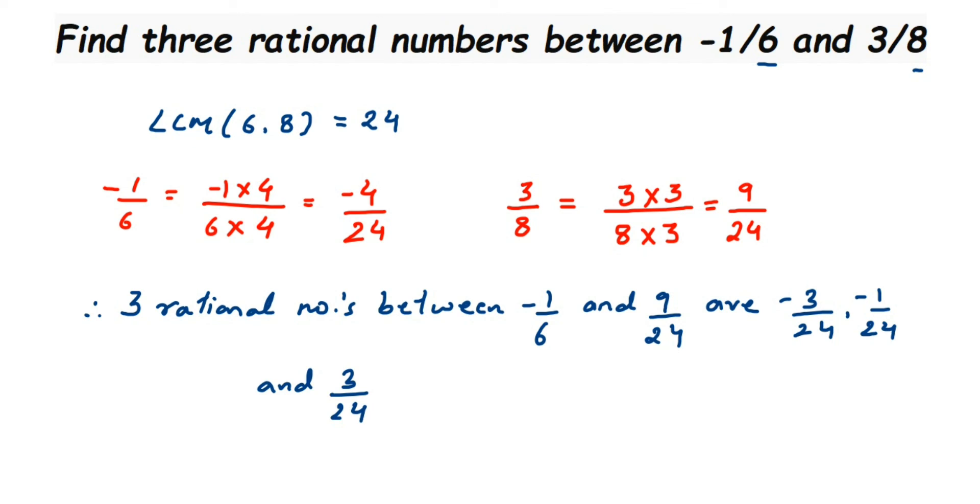So these are the three rational numbers. You can take any other rational number if you want, but I have just taken minus 3, minus 1, and 3. Make sure that they lie between these two rational numbers. I hope this question is clear. In case you have any further question or doubt, you can drop a comment below. Thank you so much for watching.